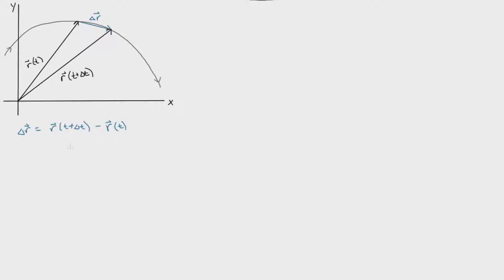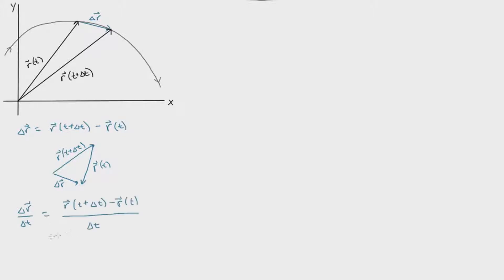If you remember how to add and subtract vectors, you're taking r of t plus delta t, rotating the r of t vector 180 degrees, and adding it to that vector. We can also include the time variable and look at the ratio of the difference vector — delta r over some given amount of time — and divide it by delta t. Whenever you have some displacement divided by some time, that gives you a velocity vector, but this is an average velocity.